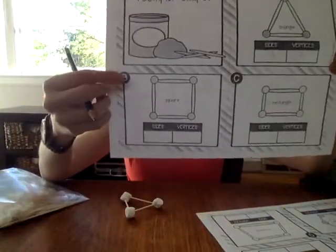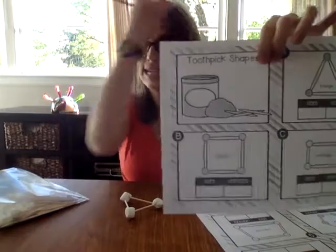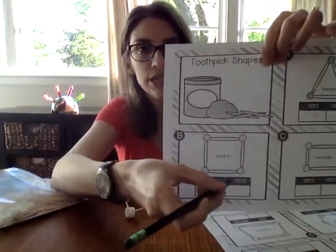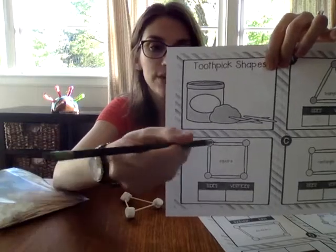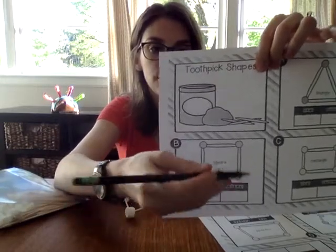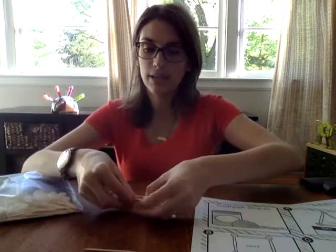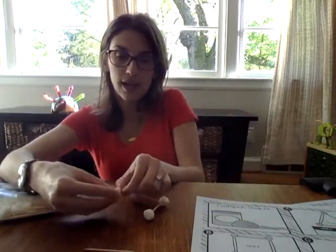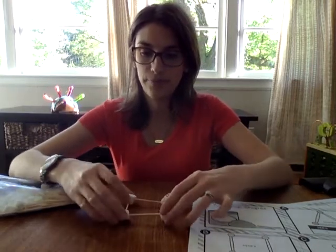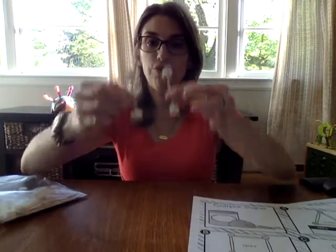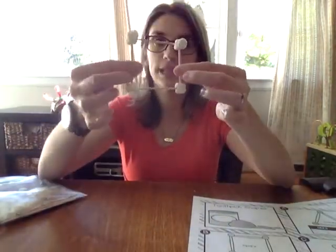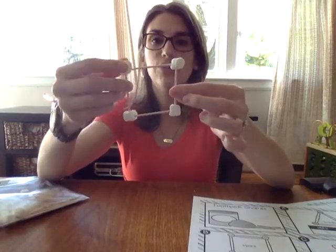Now let's go to shape B. We're going to turn it into a square. Let's see how many sides — one, two, three, four. And how many vertices? One, two, three, four. So I'm going to get one more toothpick — that's going to be another side — and one more marshmallow — that's going to be another vertex. This time I'm going to turn it into a square. A square. Four sides and four vertices. It's kind of turning into a rhombus now, isn't it? Four sides and four vertices — I'm going to go ahead and record that.